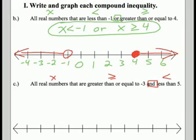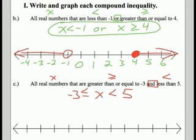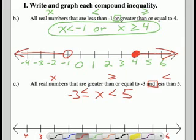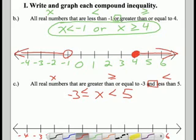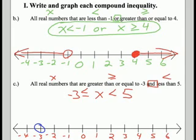For c: all real numbers that are greater than or equal to negative 3 and less than 5. This is an 'and,' so we put x in the middle, negative 3 on the left side, and 5 on the right side. Substitute in the proper inequality signs — remember to flip the first inequality, so the greater-than sign becomes a less-than sign: negative 3 ≤ x < 5. Number the number line to fit both values. Negative 3 is a closed circle; 5 is an open circle. Because this is an 'and' statement, we shade everything in between.